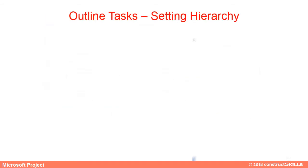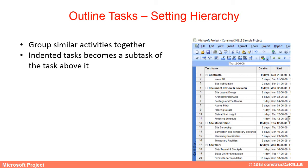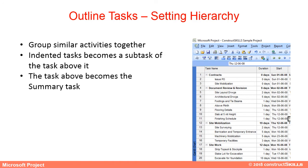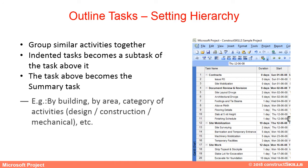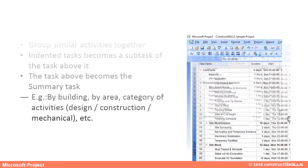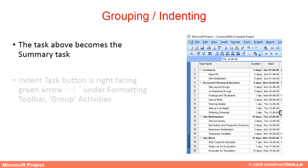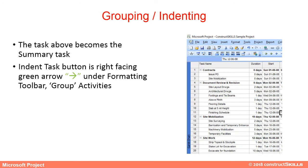Outline tasks group similar activities together. Indented tasks become a subtask of the task above it, and that task above becomes the summary task. For example, grouping by building area categories such as Design, Construction, Mechanical, etc. The Indent Task button is the right-facing green arrow under the formatting toolbar, used to group activities.